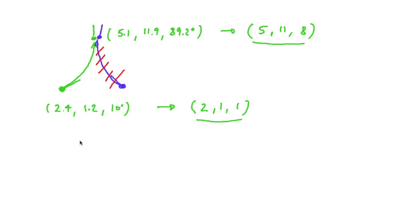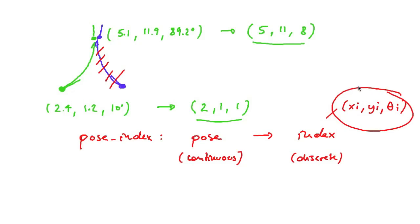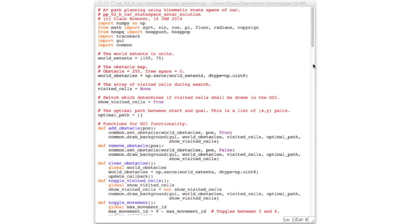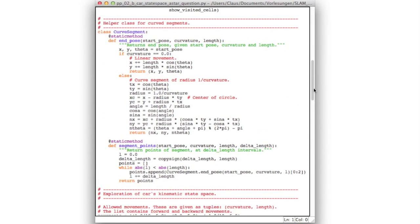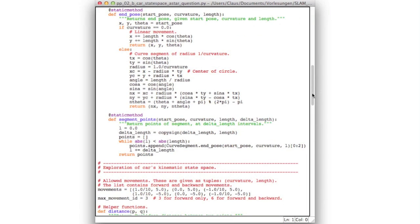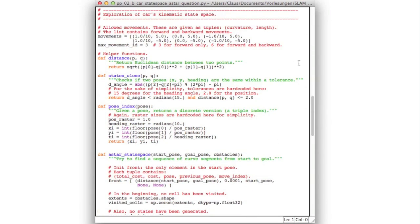So the only thing we'll have to implement for this to work is a function called pose_index, which takes a continuous pose and computes a discrete index consisting of an x index, a y index, and a heading angle index. And using those indices, we have to keep a record of any index that we visit during our search. Now this brings us to your final programming assignment. Namely, you'll have to modify the ppo2a code to arrive at the ppo2b car state space A star solution code, which is almost identical to the previous code, but now has to include this discrete collection of states which have been visited already.